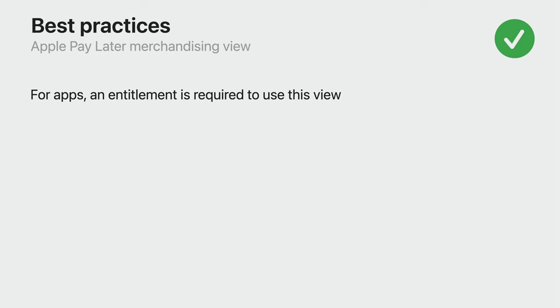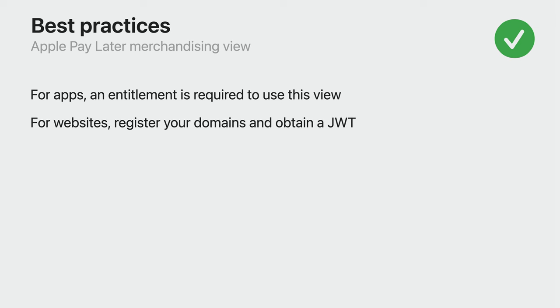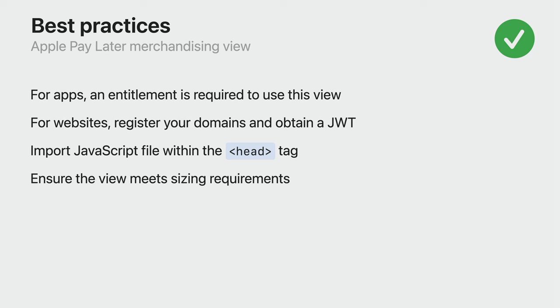Here are some best practices for incorporating the Apple Pay Later merchandising view. For apps, an entitlement is required and can be obtained on the Apple Developer Portal. For websites, remember to register your domains and obtain a JWT for use when including the SDK. Where possible, try to import the SDK within the head element so the merchandising view is ready when your page is fully loaded. The size of the view can be customized, but ensure you follow the size requirements. If your website has a restrictive content security policy, follow the recommended guidelines to ensure the SDK can be loaded across domains.